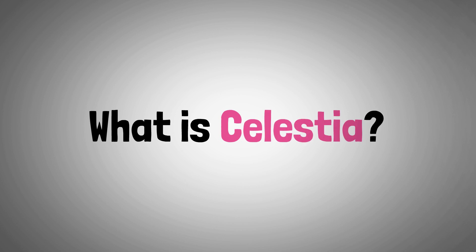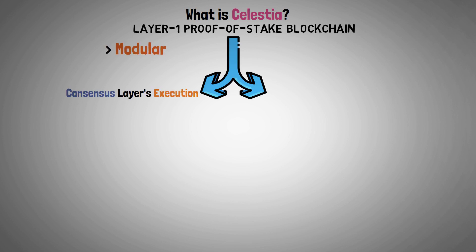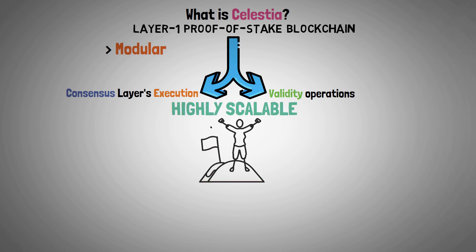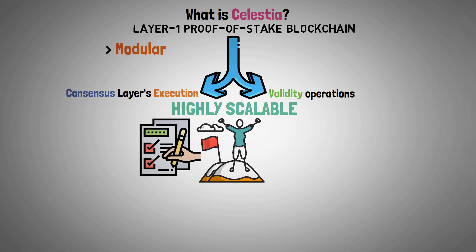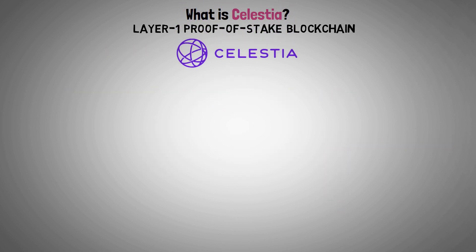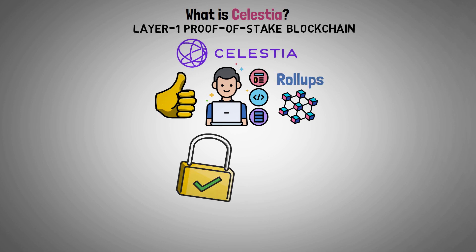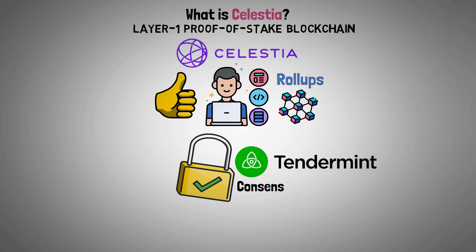So let's start with what is Celestia? Celestia is a layer-one proof-of-stake blockchain that is modular and decouples the consensus layer's execution and validity operations. As a result, it is highly scalable because its purpose is to order transactions and ensure data availability without having to worry about execution validity. On top of Celestia, developers can create customized and optimized roll-ups or blockchains that take advantage of the shared security layer that uses Tendermint as its consensus engine.